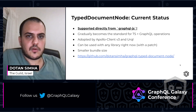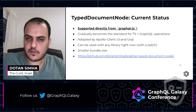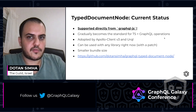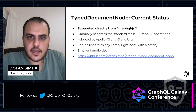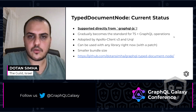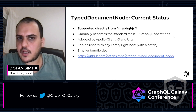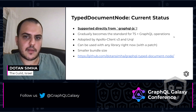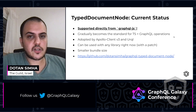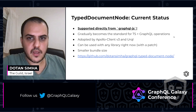TypedDocumentNode is now supported directly from GraphQL.js — the type itself is part of the GraphQL.js implementation, so you can use it from there. This is gradually becoming the standard for this kind of integration. Apollo Client 3 and Urql have adopted it and are now using it. If you're using TypedDocumentNode, all you need to do is specify it and types will be inferred automatically. If you are not using those libraries, you can go to the TypedDocumentNode repository to see a list of additional supported libraries — you can use a patch we provide to add support until those libraries officially support it.